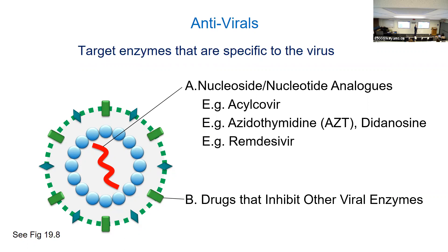Partly because you can develop drugs for one virus — let's say it's developed for Ebola — and now it's been repurposed and it works on SARS-CoV-2. That's the case with one of the examples I'm going to give you. Class B is basically drugs that find something else that's unique to that virus, and every virus usually has something a little bit different on it. I have two examples I'll show you today.